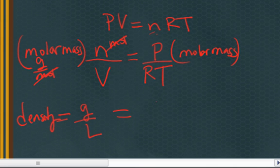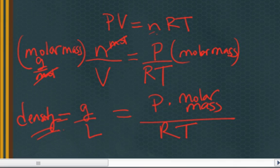So, the density of the gas can be calculated if you know the pressure of the gas, the molar mass of the gas, the gas constant, and the temperature. So, we've just derived an equation for calculating from pressure, temperature, and molar mass the density of a gas.